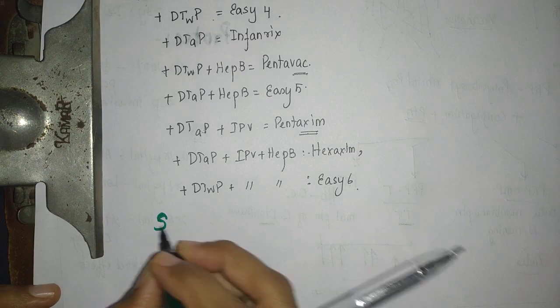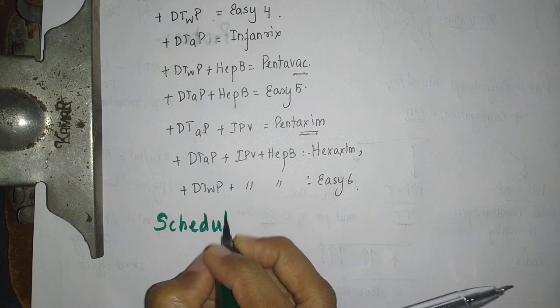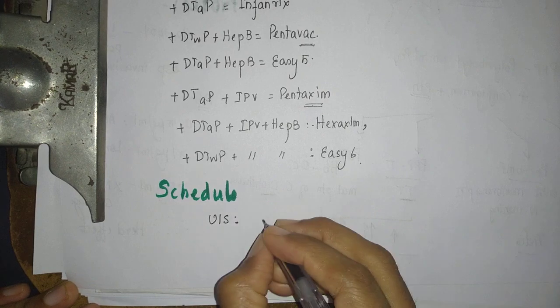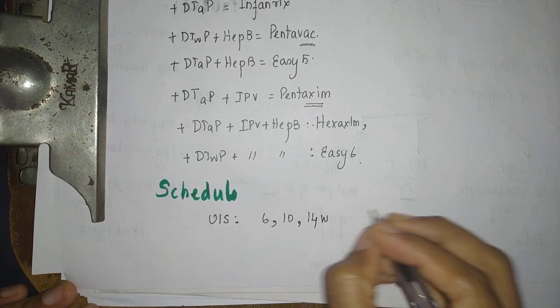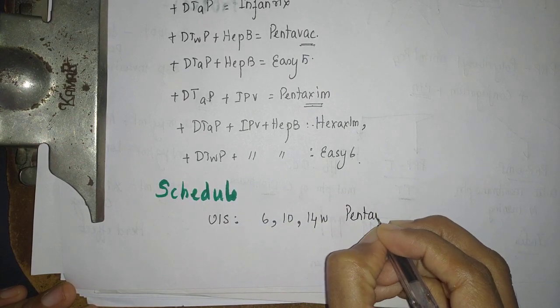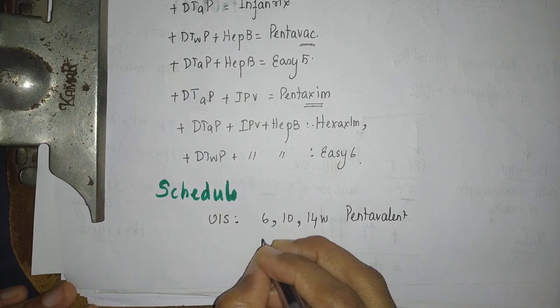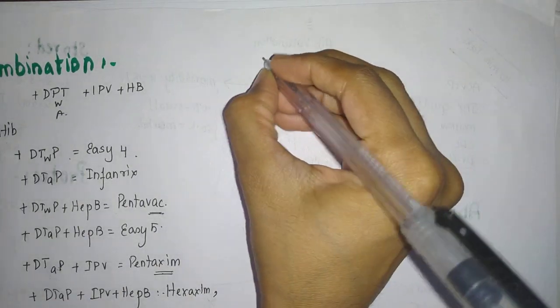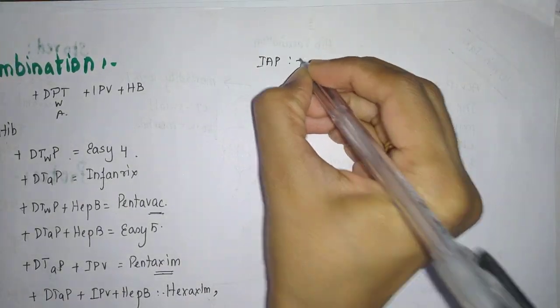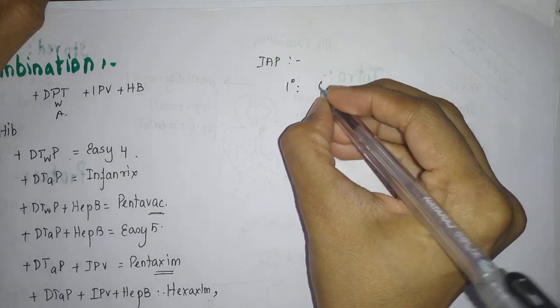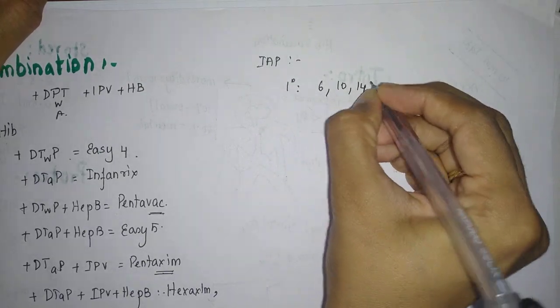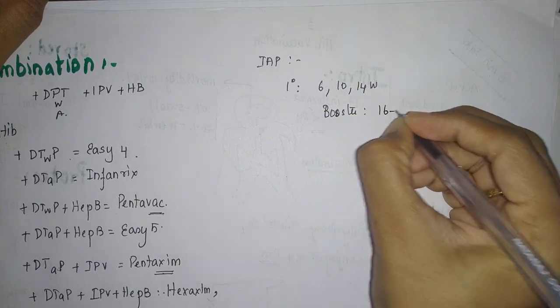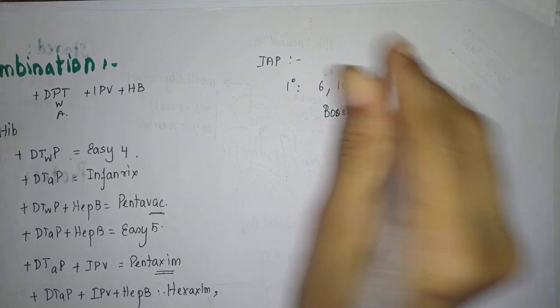What is the schedule? As far as our universal immunization program is concerned, it is 6, 10 and 14 weeks as a pentavalent vaccine. And no booster. Note this point. There is no booster. What about IAP schedule? IAP schedule advises for a primary series 6, 10 and 14 weeks. Booster at 16 to 18 months. This booster is very important.